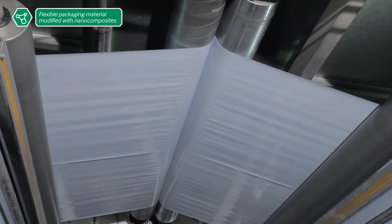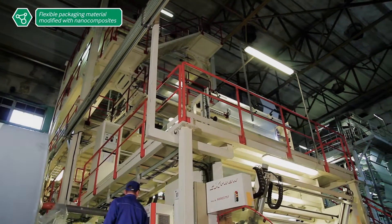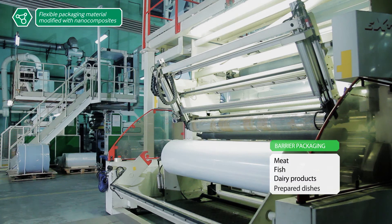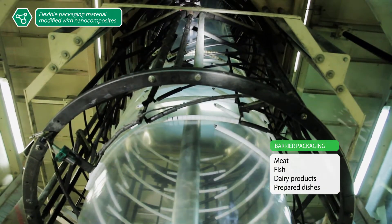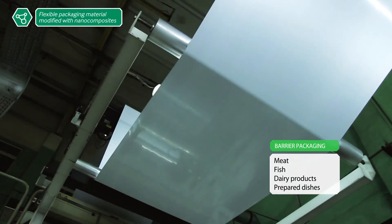The resulting nano-composite packaging materials combine the flexibility, elasticity and processing properties of polymers with the hardness, durability and heat resistance of ceramics.